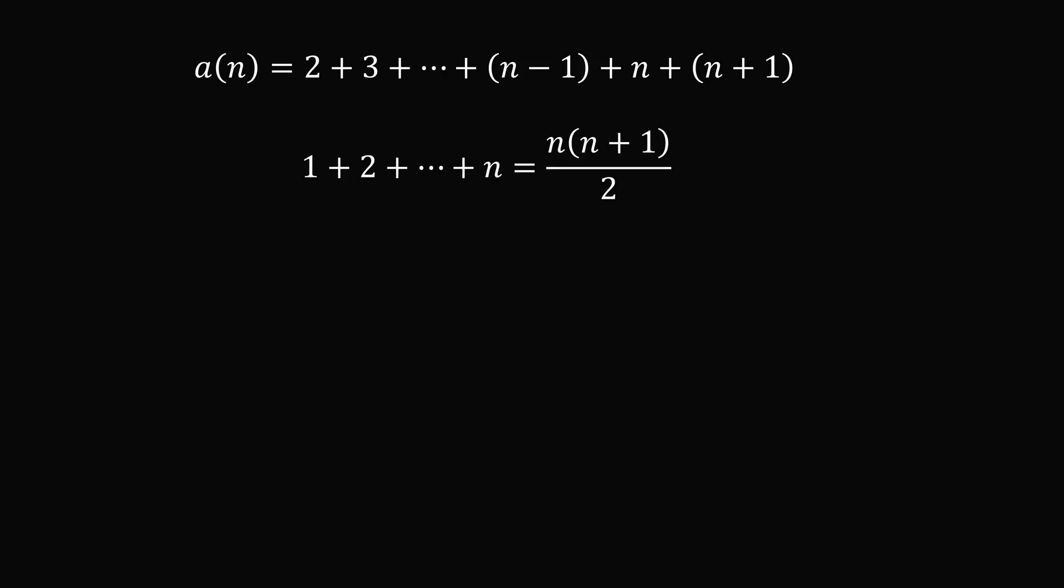We need the sum to go up to n+1, so we'll increase this. Then we need to subtract 1 because we're starting at 2. So a(n) = (n+1)(n+2)/2 - 1.